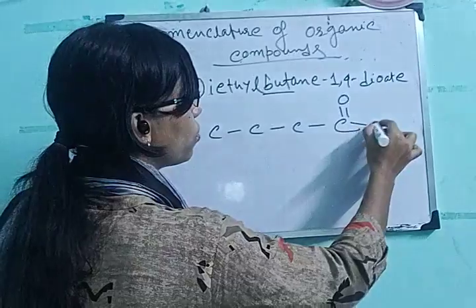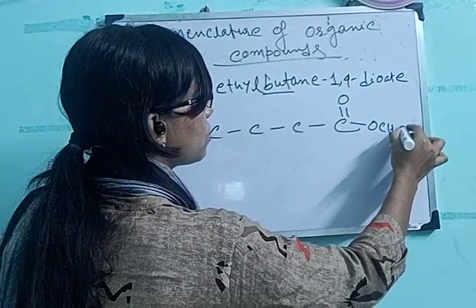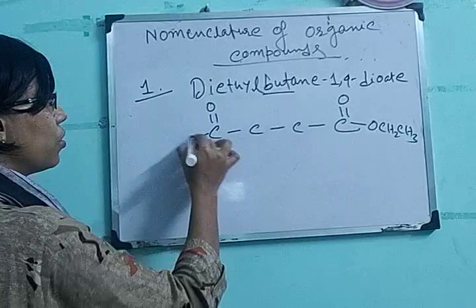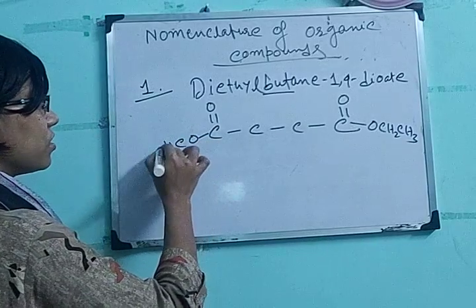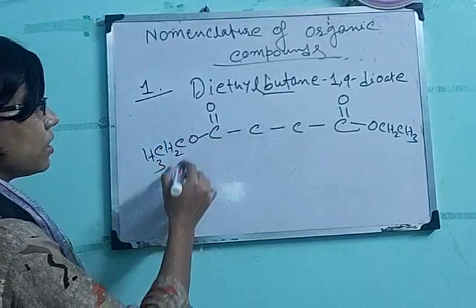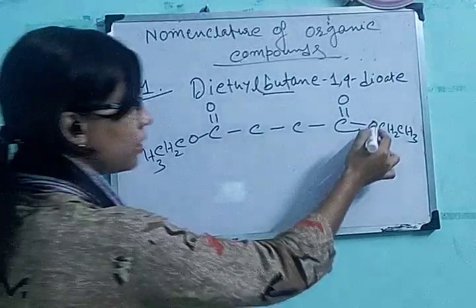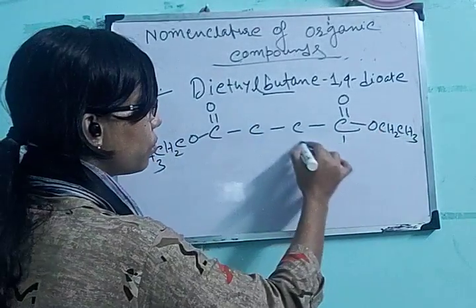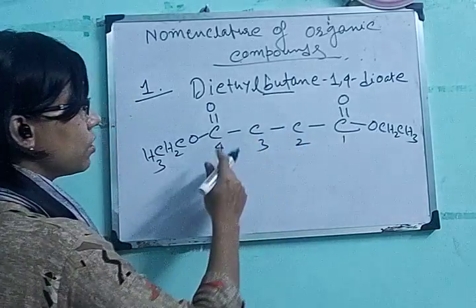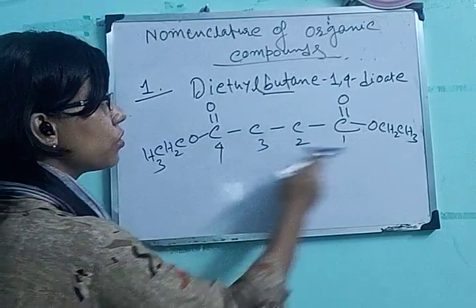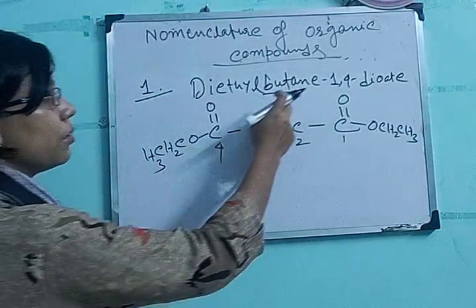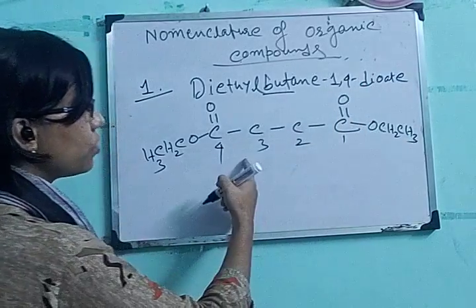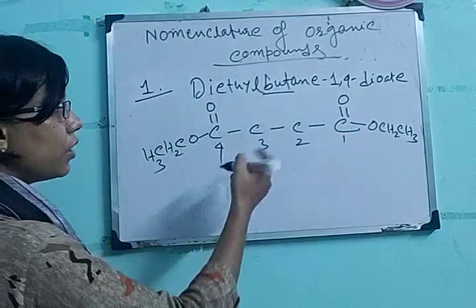So at carbon 1: C=O, O-CH₂CH₃. And here also C=O, O-CH₂CH₃. This one is ethyl, and this one is another ethyl — so diethyl. Put the numbers: 1, 2, 3, 4 means butane. So diethyl butane-1,4-dioate.